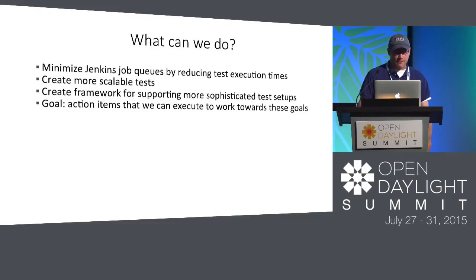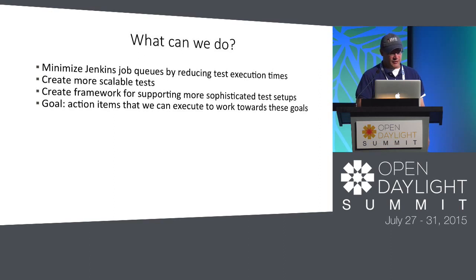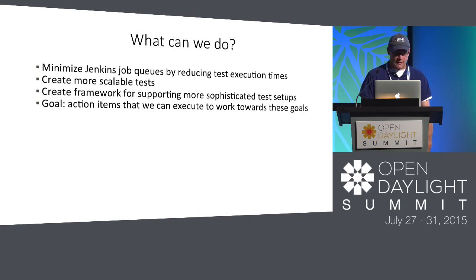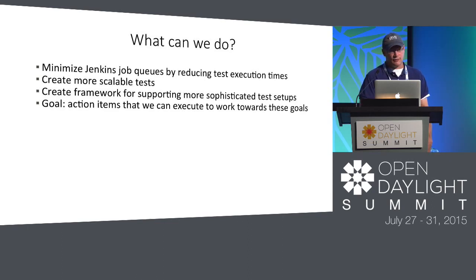What can we do? Some things are easier than others. We can try to minimize Jenkins jobs by reducing test execution times — that makes the job queue shorter because jobs are retiring faster, which helps when people are waiting on a big backlog. You can create more scalable tests so that as they mature and you add more sophistication, it won't completely tear down your testing infrastructure. You can create a framework for more sophisticated test setups — whether it's a Docker container or Vagrant — with functionality already in it, because there will be commonalities across projects.